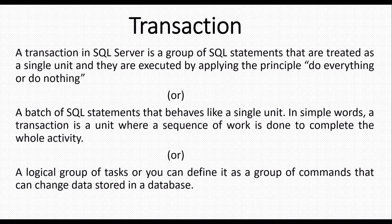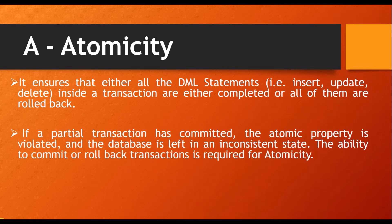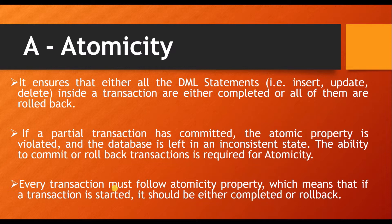Now let's see all four properties one by one. First is atomicity. It ensures that all DML statements — your insert, delete, or update statements — inside a transaction are either all completed or all rolled back. For example, if we have written 10 statements inside a transaction and 9 succeed but one fails, SQL Server has to roll back the previous 9 that completed successfully to satisfy the atomicity property. There should be no partial execution. If you rerun the transaction, it will not resume from where it failed — it will restart from the beginning, from statement 1.